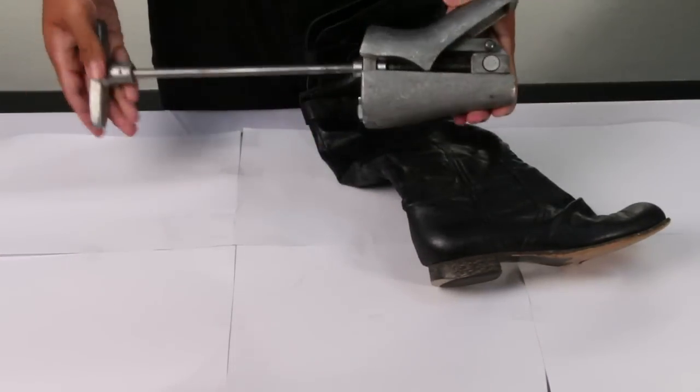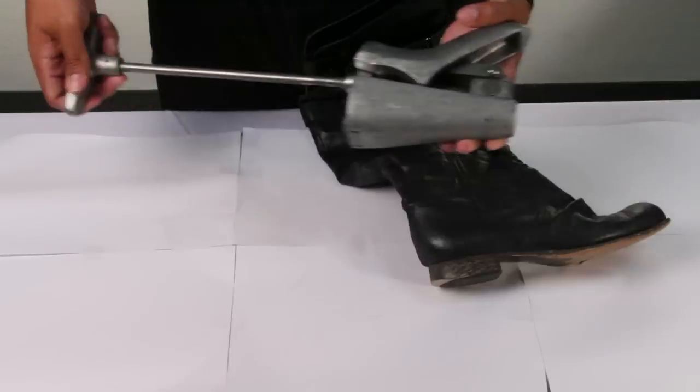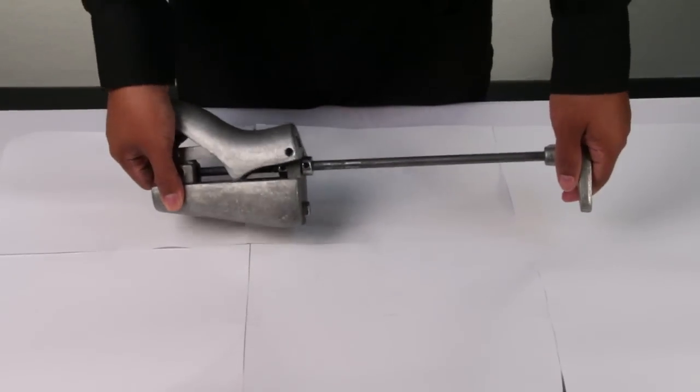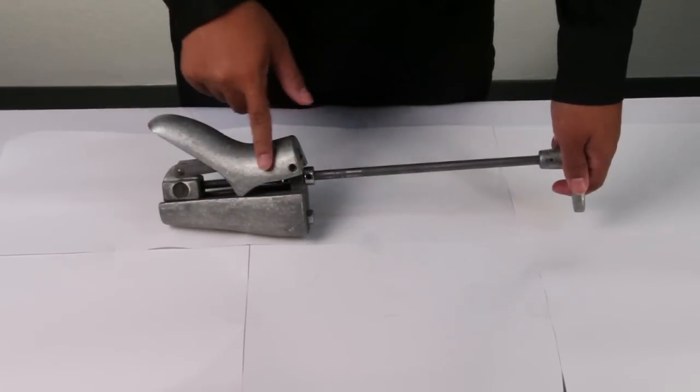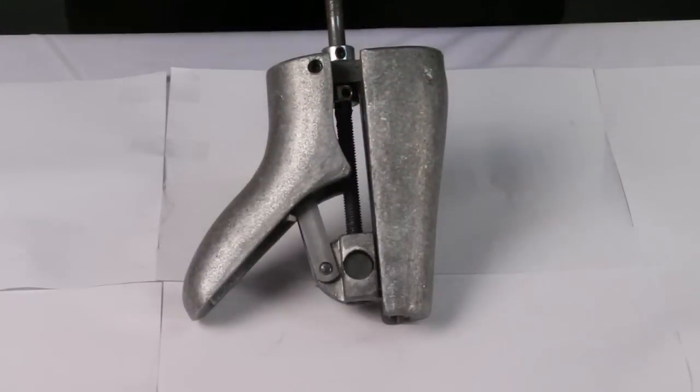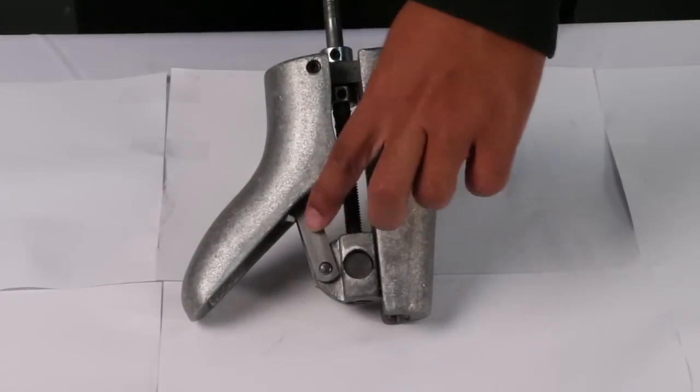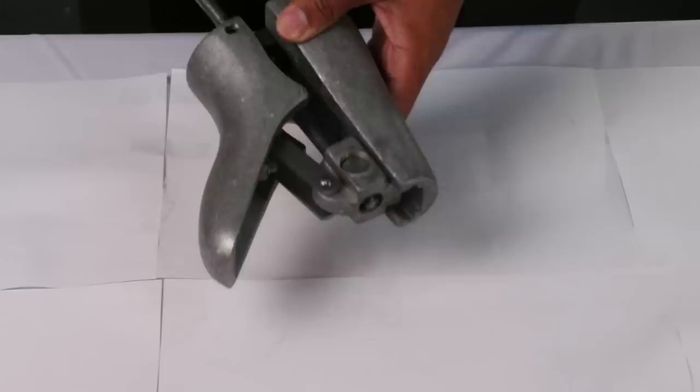Before the demonstration on how to use this boot stretcher, I'll talk a little bit more about it. This boot instep stretcher and vamp raiser is made out of cast aluminum metal. Knowing this, the screw mechanisms and strong metal materials will keep your boot stretching for years.